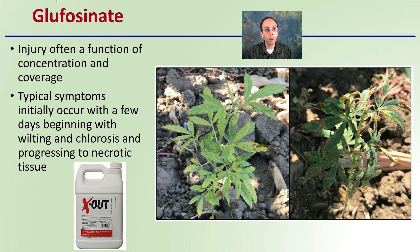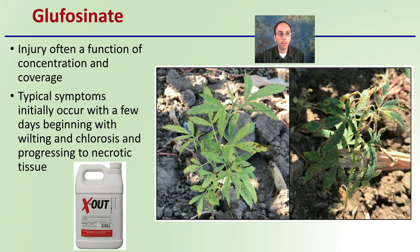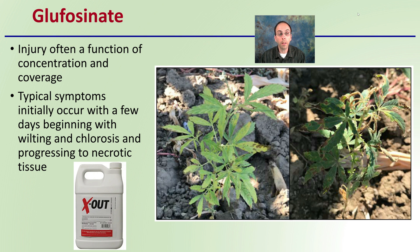Then we have glufosinate, where injury is often a function of concentration as well as coverage. The common trade name would be Finale, if you're familiar with that type. Typical symptoms initially occur within a few days, beginning with wilting and chlorosis and progressing to necrotic tissue. Here we see a little more aggressive spotting and spread. Again, this occurs typically within a few days — evidence that this herbicide may have drifted.